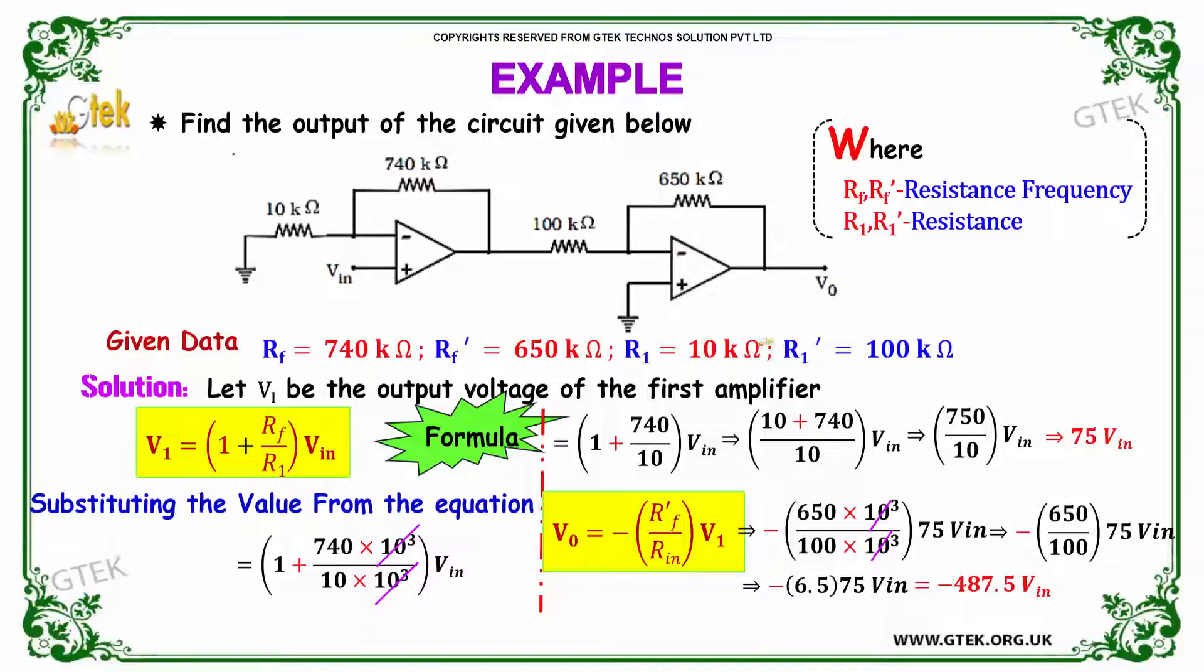As you know, V0 is equal to minus of, V0 equal to minus of R1 dash F, Rf dash and Rin into V1. We got the value as Rf dash is 650 into 10 power 3 divided by 100 into 10 power 3 Rin. And you got here into V1.